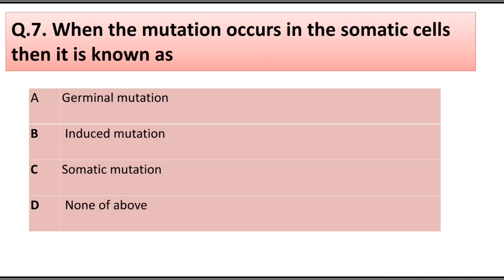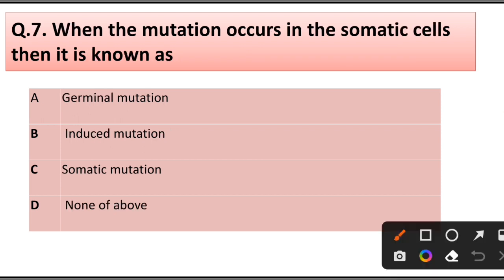Question number 7. When mutation occurs in the somatic cell, it is known as: germinal mutation, induced mutation, somatic mutation, or none of the above. Answer is option C: Somatic mutation.